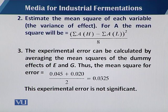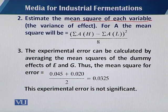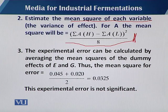When we calculate the effect, we have to estimate the mean square of each variable. For the mean square of each variable, we utilize this formula: summation A with high response minus summation A with low response, squared, divided by 8.